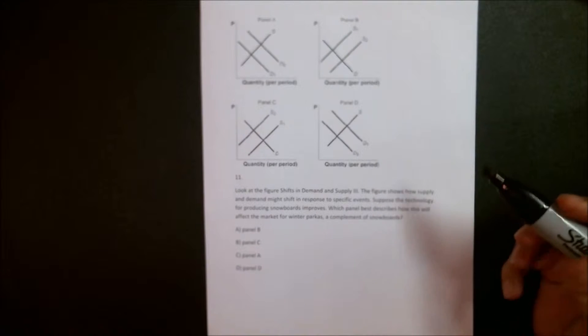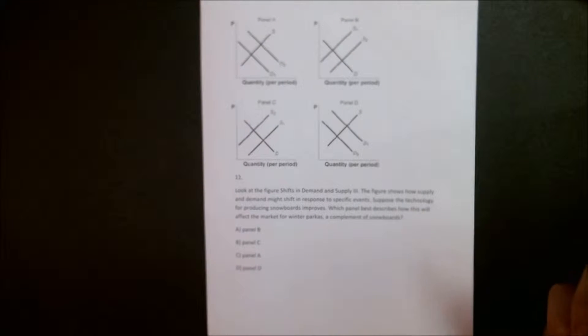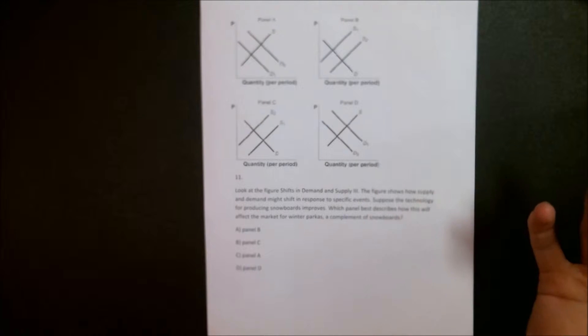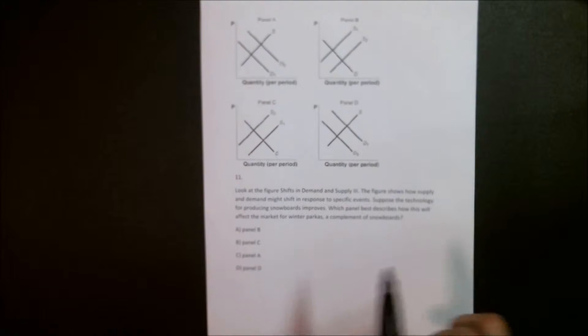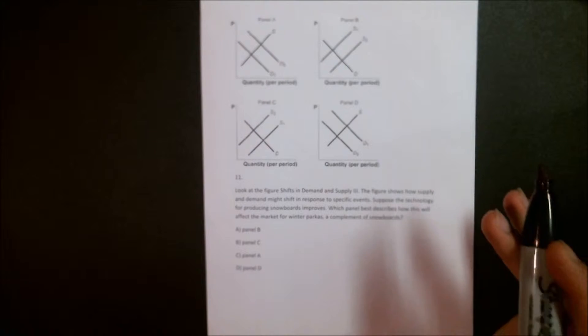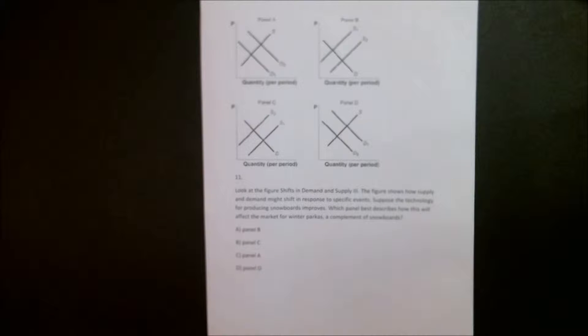Okay, so today we're going to be going over a question that involves complementary goods as well as increases in technological advancements. This question says, look at the figure shifts in demand and supply. The figure shows how supply and demand might shift in response to specific events. Suppose the technology for producing snowboards improves. Which panel best describes how this will affect the market for winter parkas, a complement of snowboards?